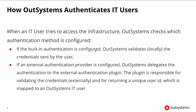So how does OutSystems authenticate IT users? When an IT user tries to access the infrastructure, OutSystems checks the authentication method that is configured. If it's using the default built-in authentication, OutSystems will validate things locally and then create the credentials needed for the user. If an external authentication provider is configured, OutSystems delegates this to the external authentication plugin. The plugin is responsible for validating the credentials externally, and then returns a unique user ID, which will be mapped to an OutSystems user ID.